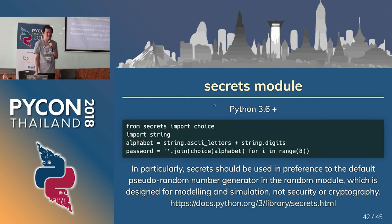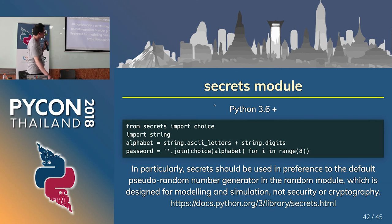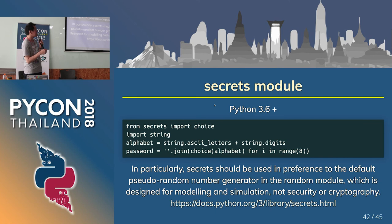Next important thing: the secrets module. This is a new built-in module since Python 3.6. It's a safer method to generate passwords. We don't need to use the random module anymore — it is very simple and very safe.